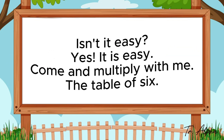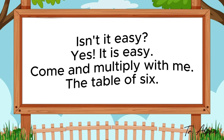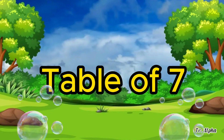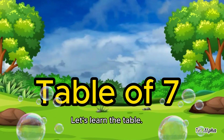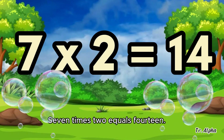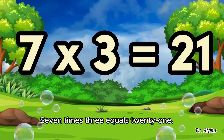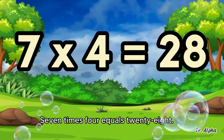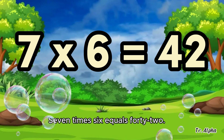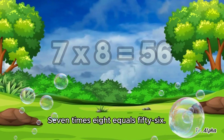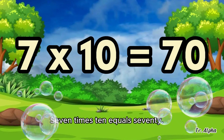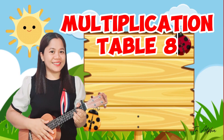Yes, it is easy! Come on, multiply with me. The table of six. Multiplication table seven song, come on join me! Let's learn the table of seven. Seven times one equals seven, seven times two equals fourteen, seven times three equals twenty-one, seven times four equals twenty-eight, seven times five equals thirty-five, seven times six equals forty-two, seven times seven equals forty-nine, seven times eight equals fifty-six, seven times nine equals sixty-three, seven times ten equals seventy.